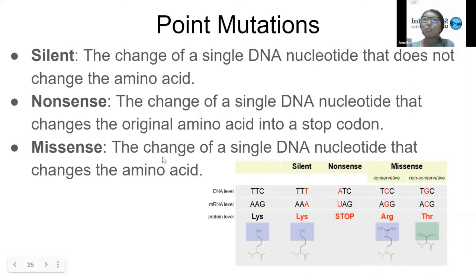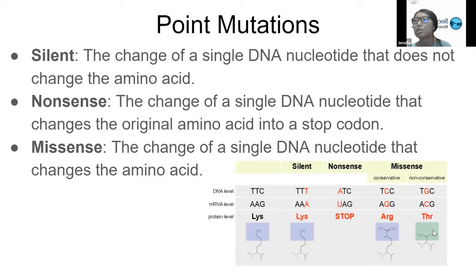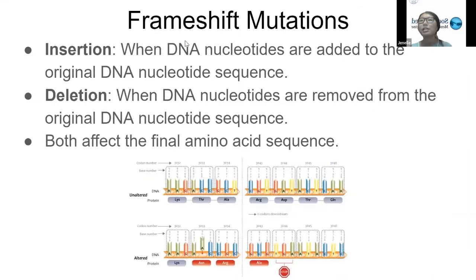Missense is when there's a change of a single DNA nucleotide that changes the amino acid. In this portion, the middle T is changed to a C, creating an arginine instead of the original lysine. There is also a distinction between conservative versus non-conservative, where both amino acids are the same type of charged amino acid versus changing to a different group. In general, missense just changes that original amino acid.